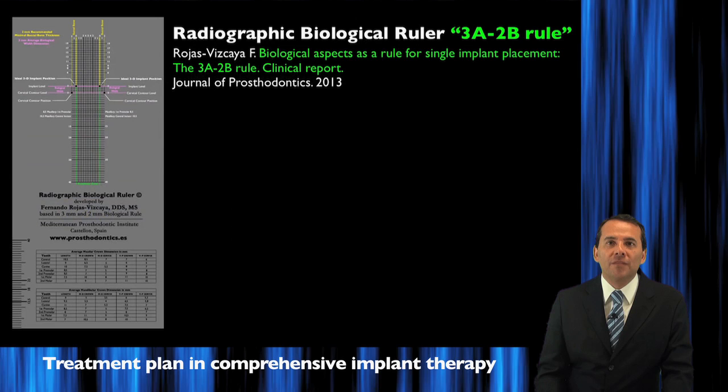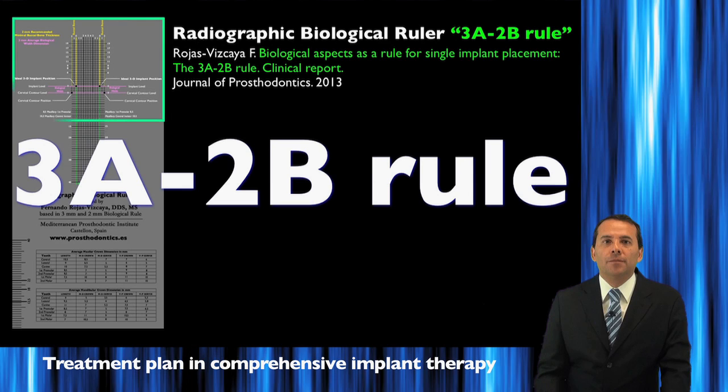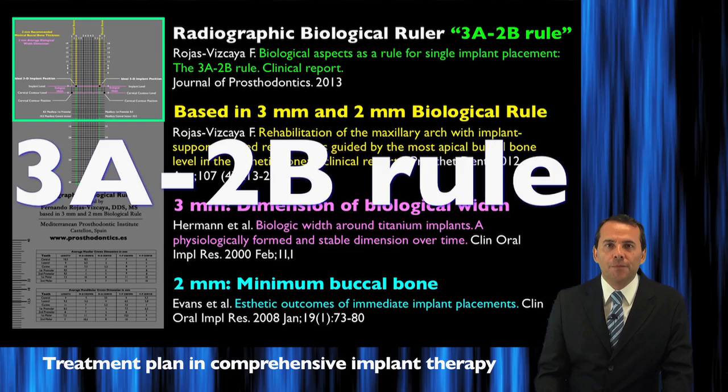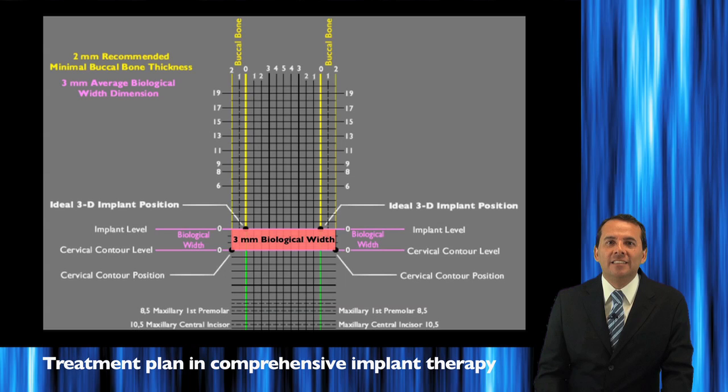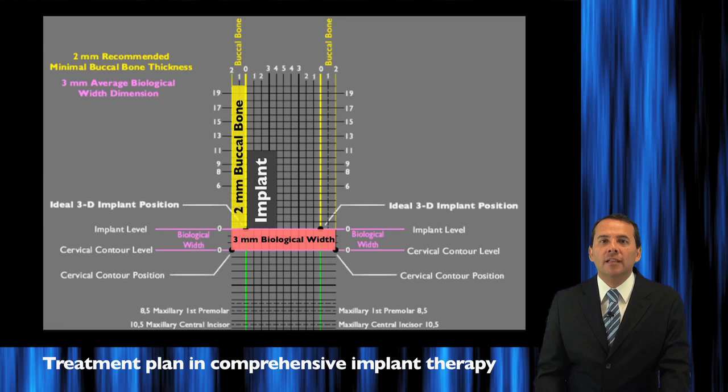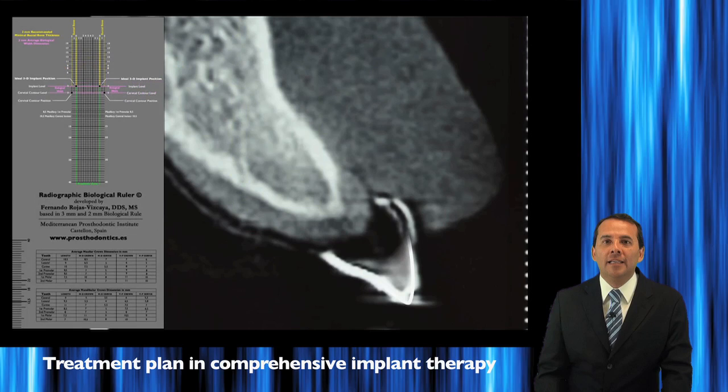I want to present the 3A-2B rule. What is this rule? How we can use this rule? From where does this rule come? What is the 3A? What is the 2B? Where does the implant need to be positioned in relation with this 3A-2B rule? What is the prosthetic zone? How can you apply this 3A-2B rule?